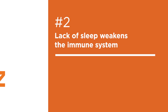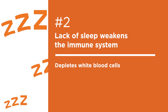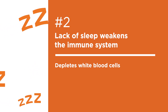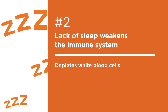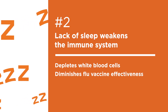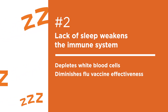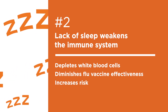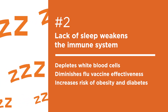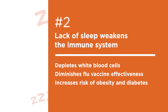Number two: lack of sleep. Severe sleep deprivation depletes white blood cells — your immune system's front lines of defense. Chronic lack of sleep diminishes the effectiveness of the flu vaccine. In the long term, people who don't sleep enough are at increased risk of developing two major immune system threats: obesity and diabetes.